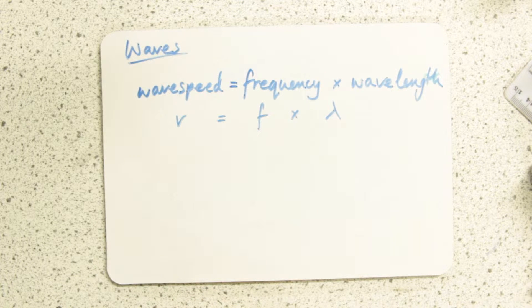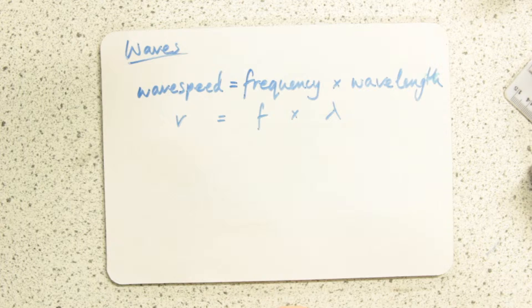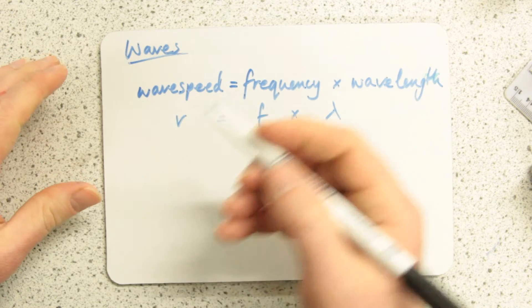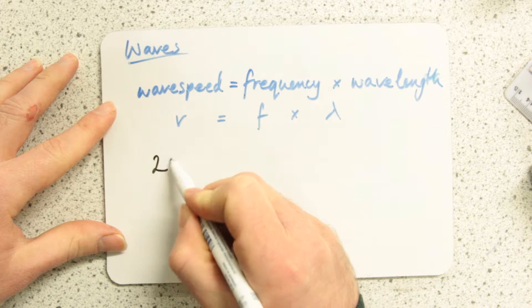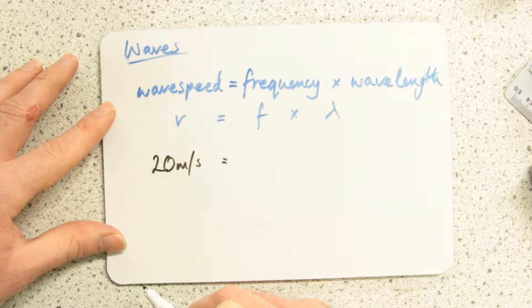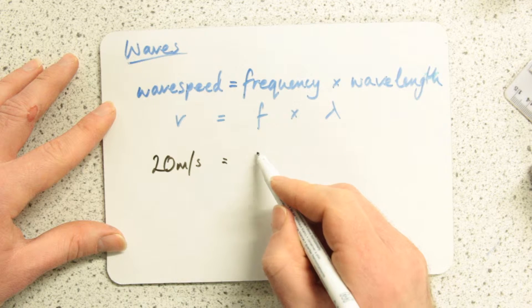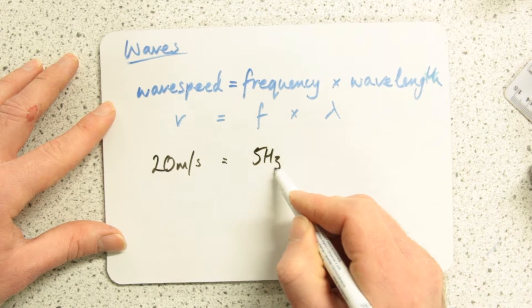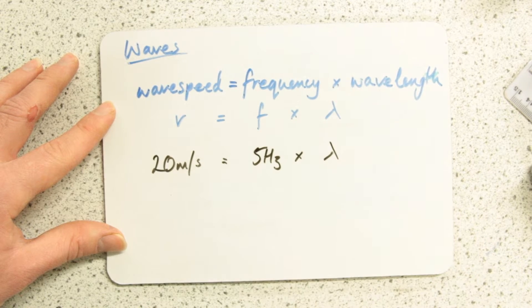Let's do a typical example then. You've been given some waves that have a wave speed of 20 metres per second, and you're told they come at a frequency of 5 every second. What's the wavelength of those?